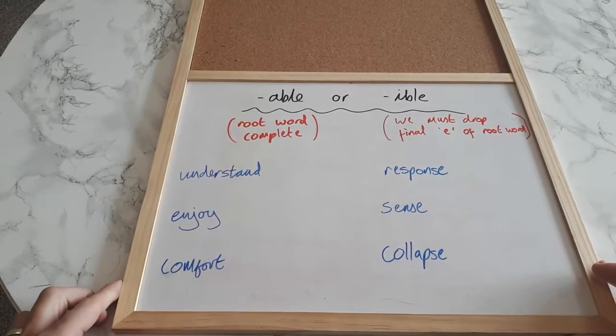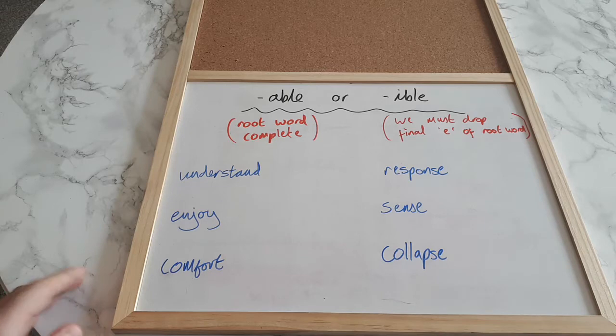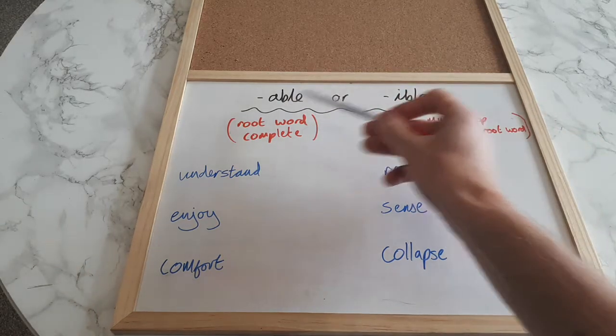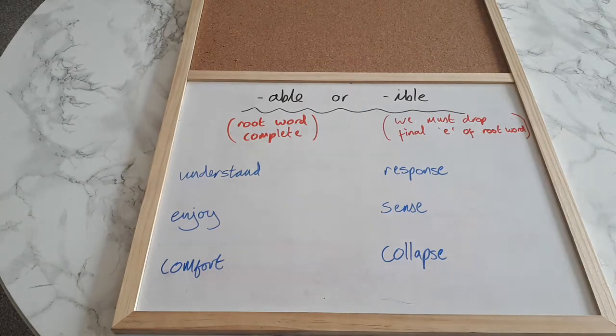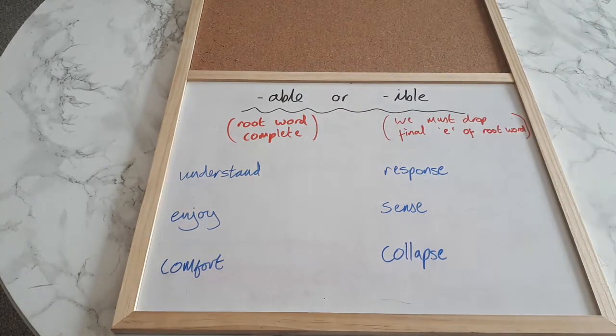Hi there everyone, Mr Orn back again and today we're going to have a little look and think about some spellings. Now we're having to think about some -able or -ible endings to words, and these -able and -ible help us to create adjectives.